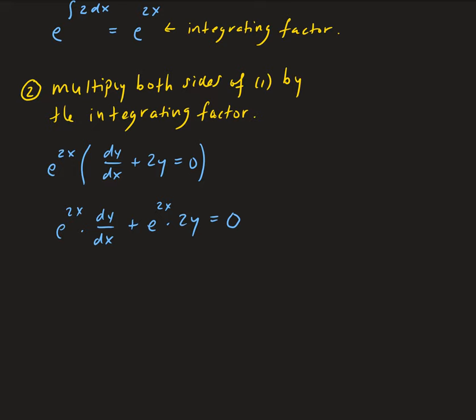This gives us something really nice. It turns out that this is going to be the derivative of a product of two functions — one function in terms of x, the other in terms of y. That turns out to be the derivative of y times e to the 2x, and then we have 0 on the right-hand side. Let's go ahead and verify this by taking the derivative of y times e to the 2x and seeing if we get this expression.